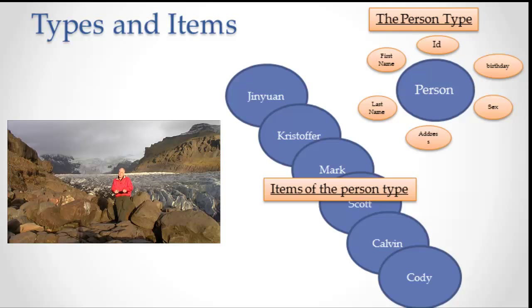When we fill that in, however, with the name Bob, and the address, and the sex, and all the rest of the stuff that Facebook wants, now all of a sudden we have an item of type person.